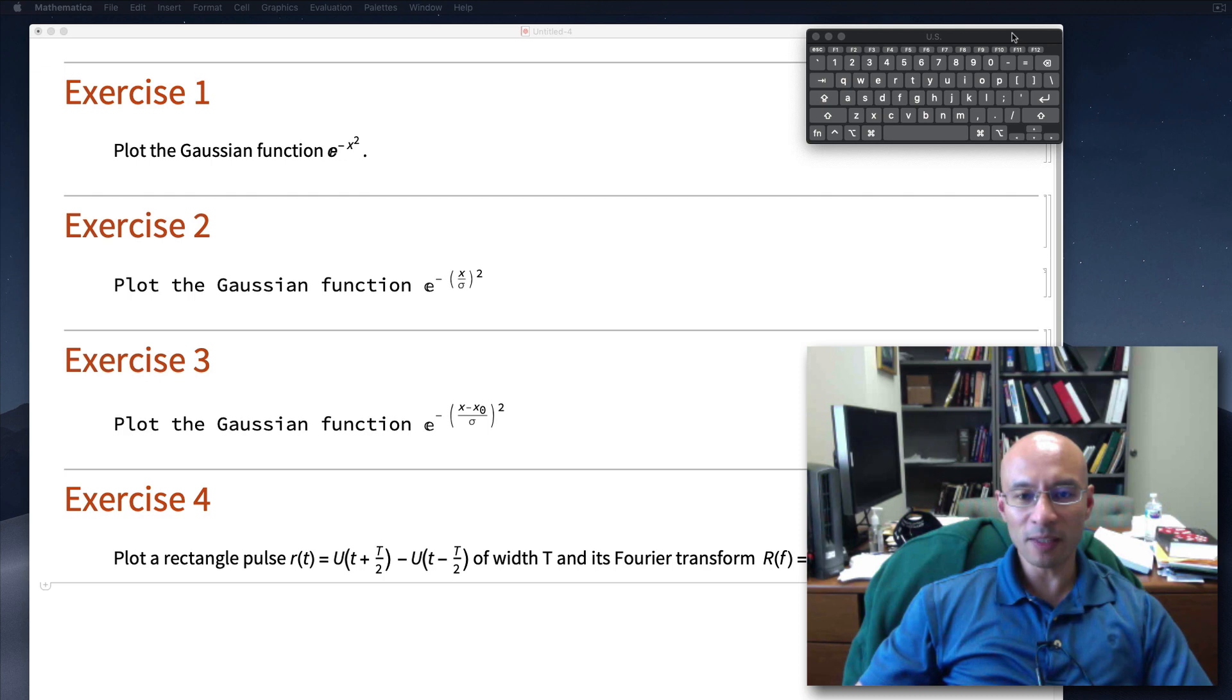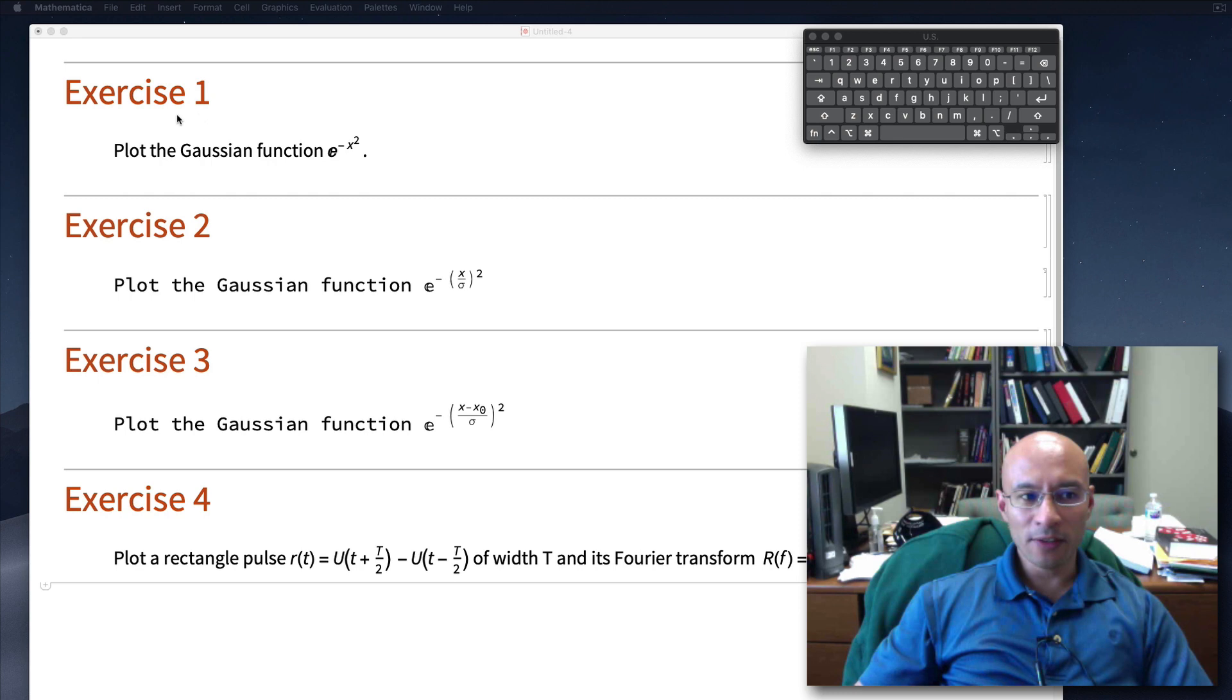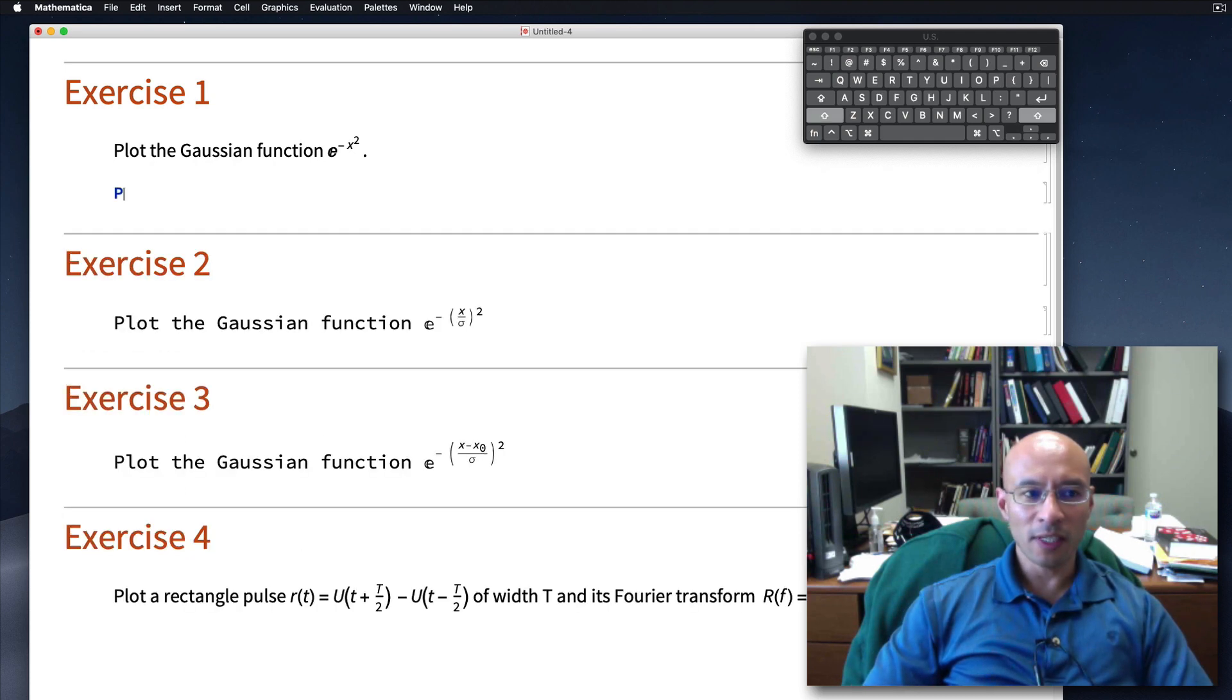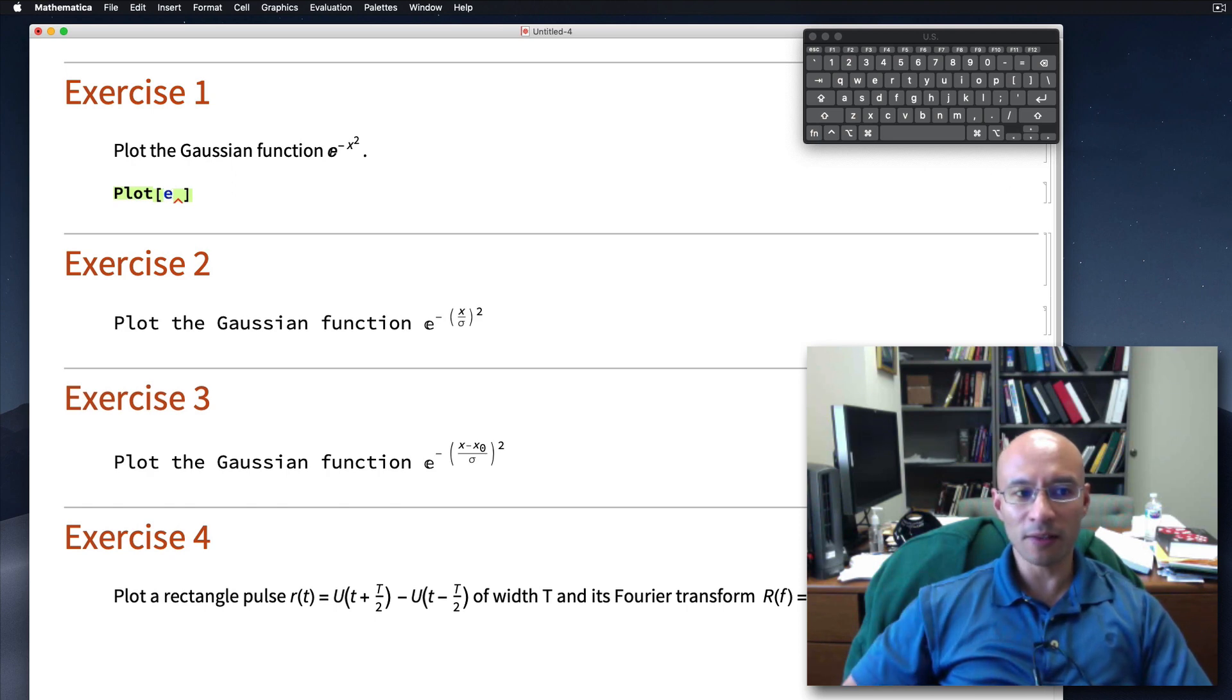I have my keyboard viewer so you can see what I'm typing in. For exercise one, I'm asking us to plot a Gaussian function. It really just starts with the plot command. I can just type plot. And then I specify some arguments. I'm going to specify this Gaussian. And to get the exponential, I can't just put in the letter E. Mathematica won't recognize that as the exponential and it won't like it.